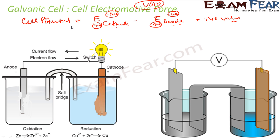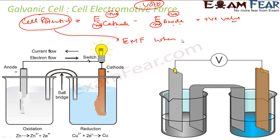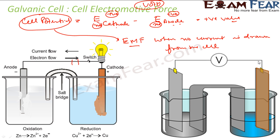This cell potential value is called electromotive force — EMF — of the cell when no current is drawn from the cell. For example, if current is being drawn, what you measure is not EMF. But if you apply a voltmeter and no current is flowing, whatever voltage you get becomes the EMF of the cell. So EMF of the cell means the cell potential when there is no current drawn from the cell.